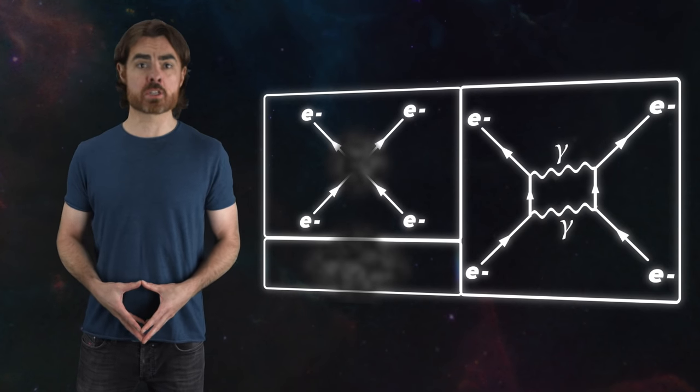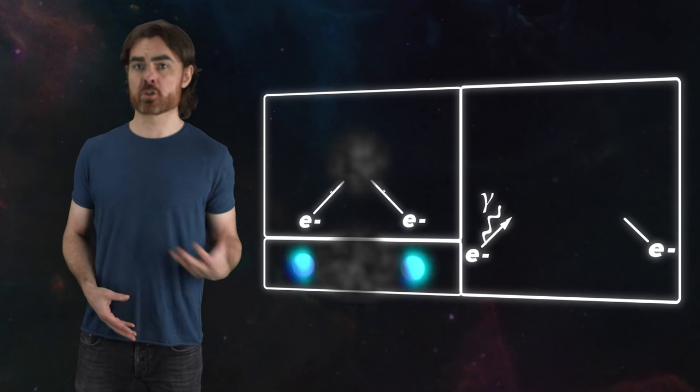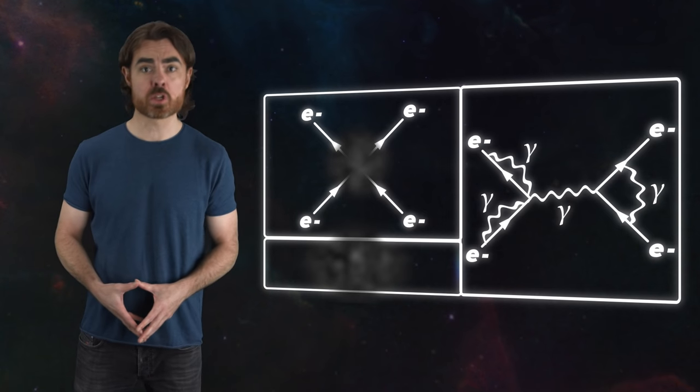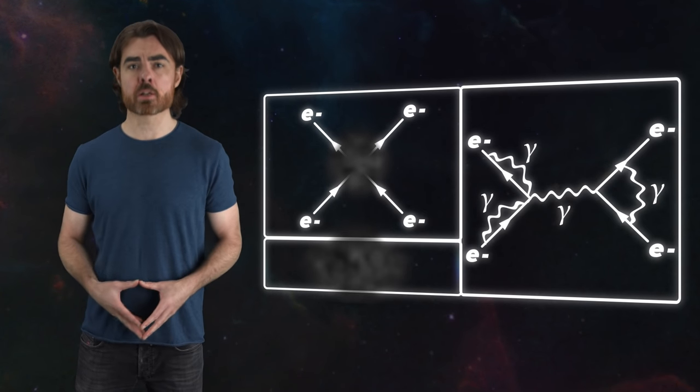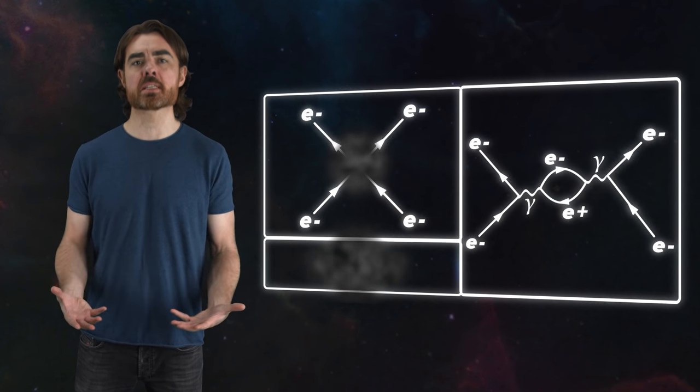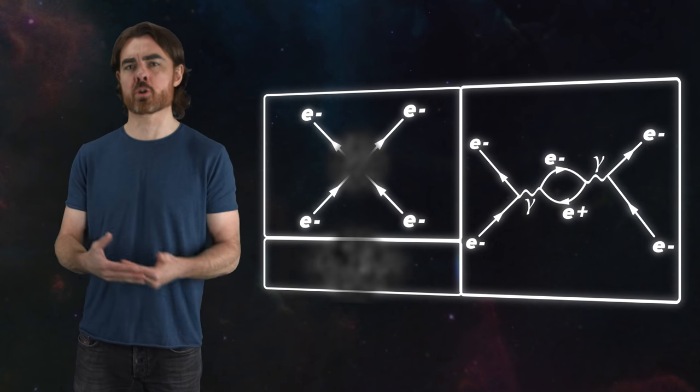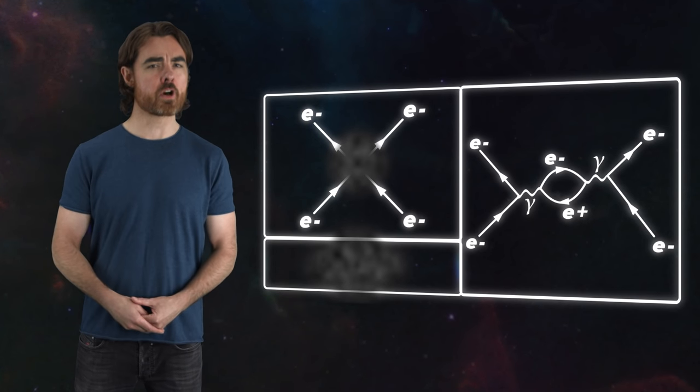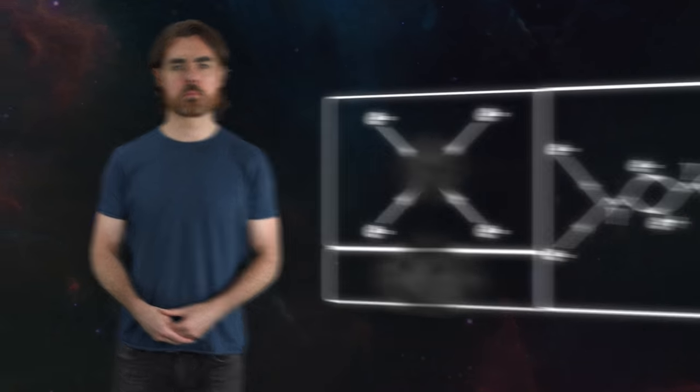But we can add as many of these vertices as we'd like, including the electrons exchanging photons with themselves at different stages in the process or photons momentarily splitting into virtual electron-positron pairs. As long as the final result is the same, any of these are possible. Part of the beauty of Feynman diagrams is that each of these diagrams themselves represents an infinite number of specific interactions.